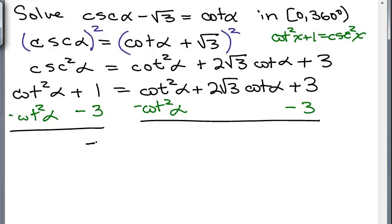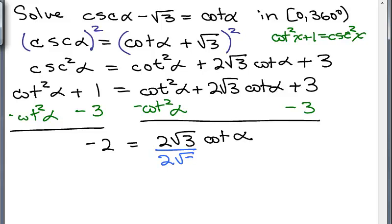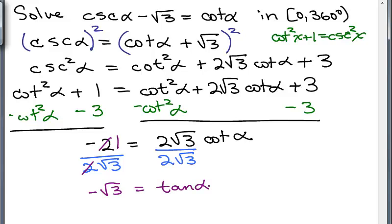On the left side I've got negative 2, and on the right side I've got 2 root 3 cotangent of alpha. Now I can divide both sides by 2 root 3 — the coefficient. The 2's cancel, so I have negative 1 over root 3 equals cotangent of alpha. I like to think in terms of tangent, so taking the reciprocal of both sides: negative square root of 3 equals tangent of alpha. That's equivalent to saying cotangent is negative 1 over square root of 3.